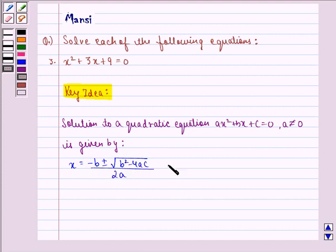This is equal to minus b plus minus under the root 4ac minus b squared, the whole divided by 2a into iota.